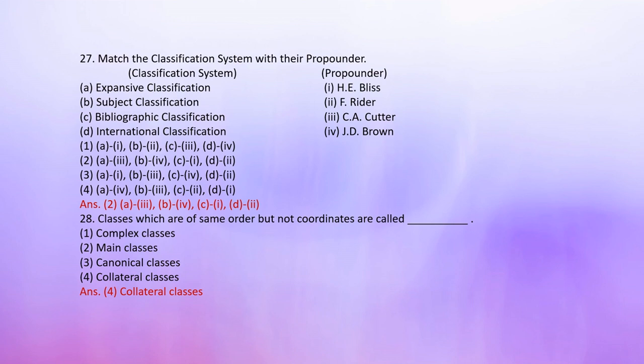Number 27: Matching the classification system with their propounder. A. Expansive Classification — Propounder A.G. Bliss. B. Subject Classification — Propounder F. Rider. C. Bibliographic Classification — 3. C.A. Carter. D. International Classification — 4. J.D. Brown. The correct answer is number 2: Expansive Classification goes to C.A. Carter; Subject Classification goes to G.D. Brown; Bibliographic Classification goes to H.E.G. Bliss; and International Classification goes to F. Rider.